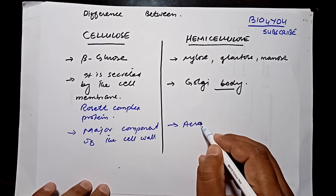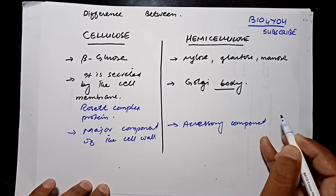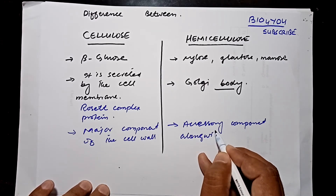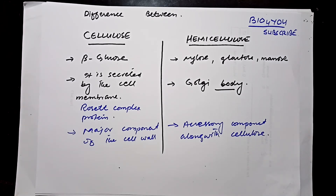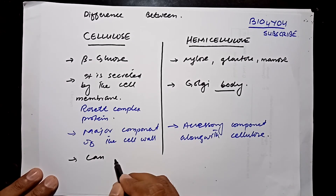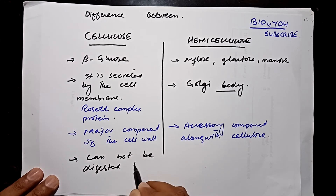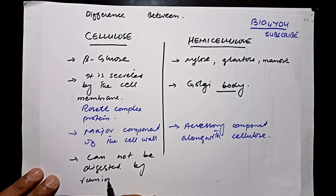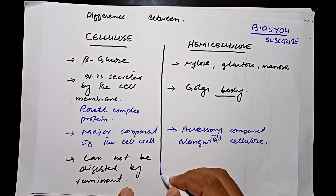Cellulose is the major component of the cell wall, while hemicellulose is the accessory component. The next difference is digestion. Cellulose cannot be digested by ruminants — this includes human beings and animals.